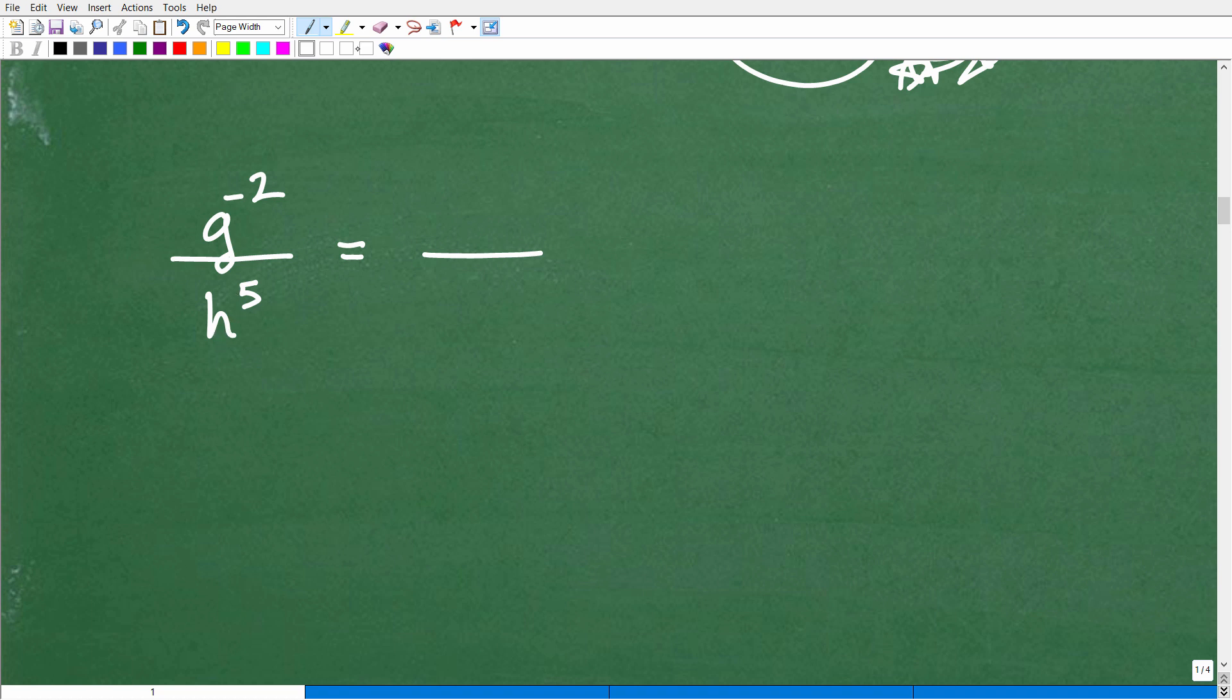I got h to the 5th, positive 5. That's pretty good. I don't want to do anything with that. So I could just leave that here, h to the 5th. But this g to the negative 2, I don't like that, so I'm going to have to move it downstairs for that to become positive. So it's going to be 1 over g squared, okay? So that's how you would do that.